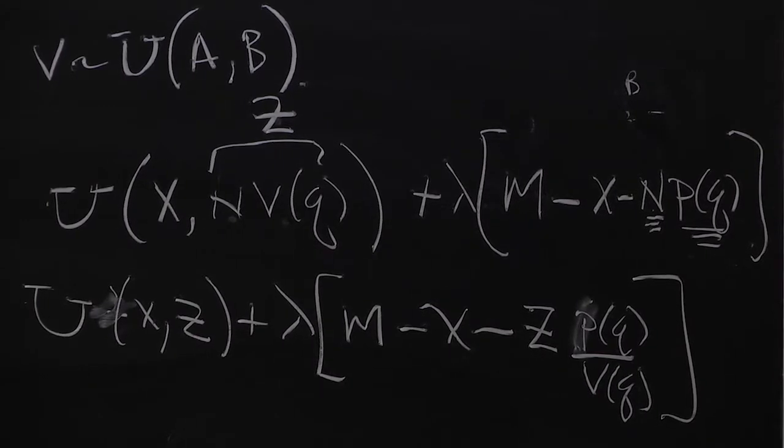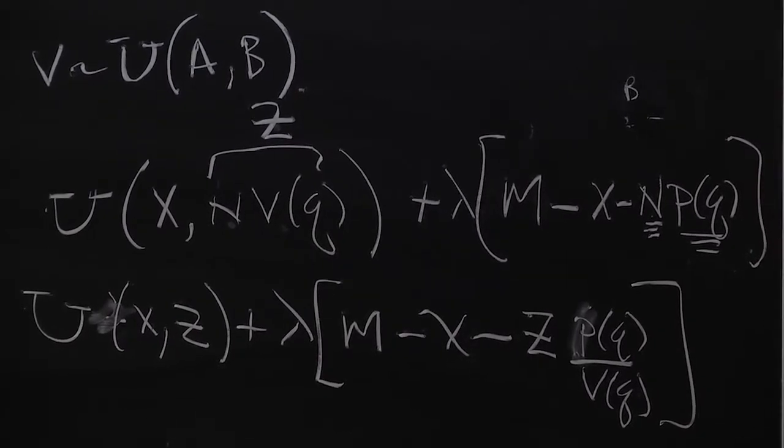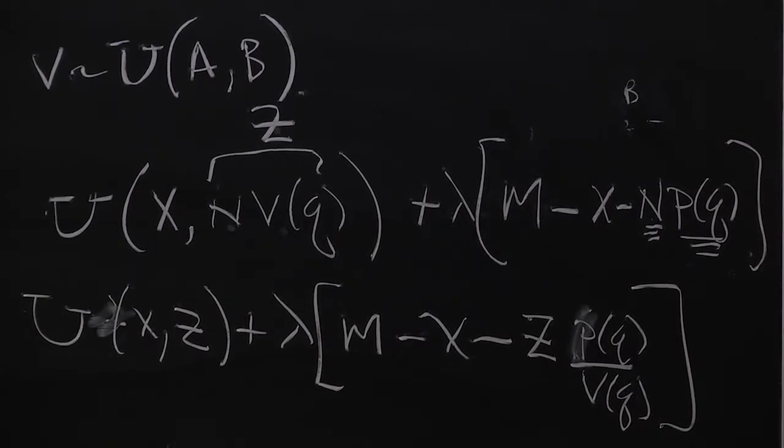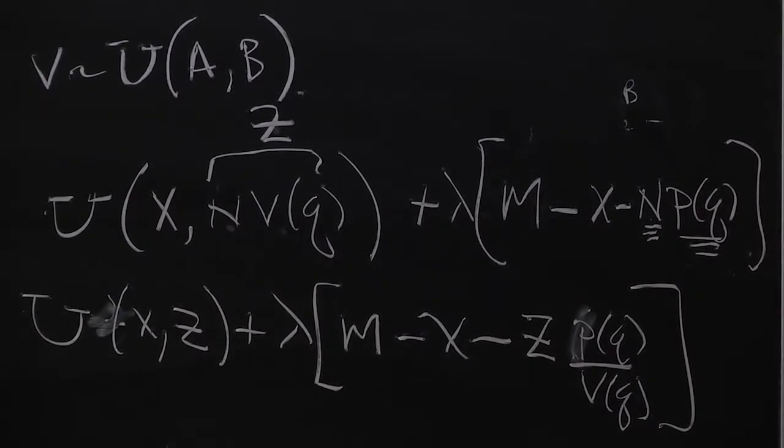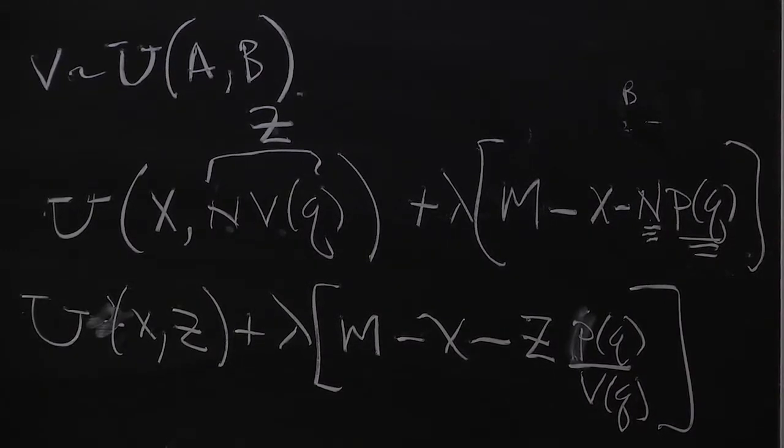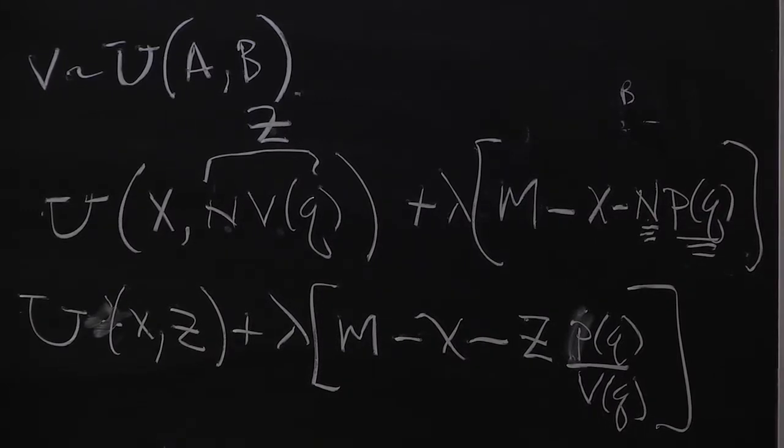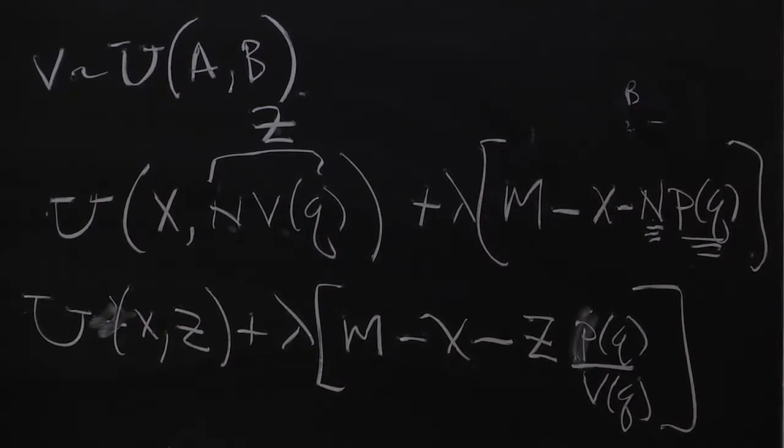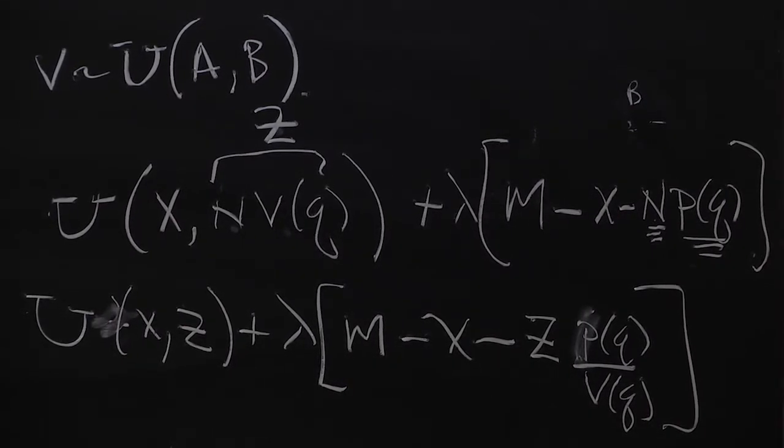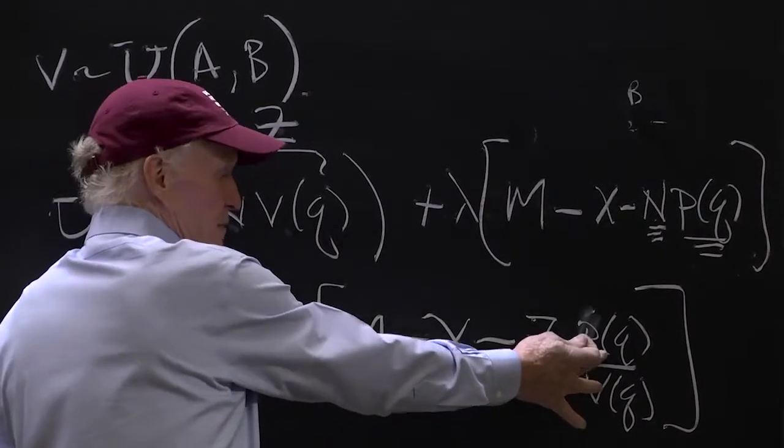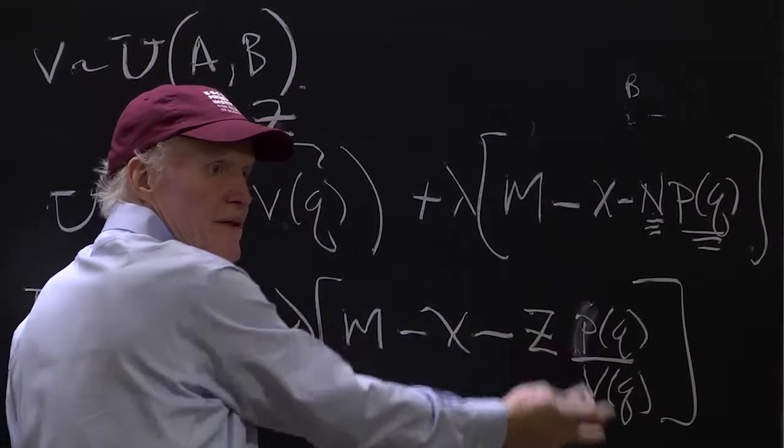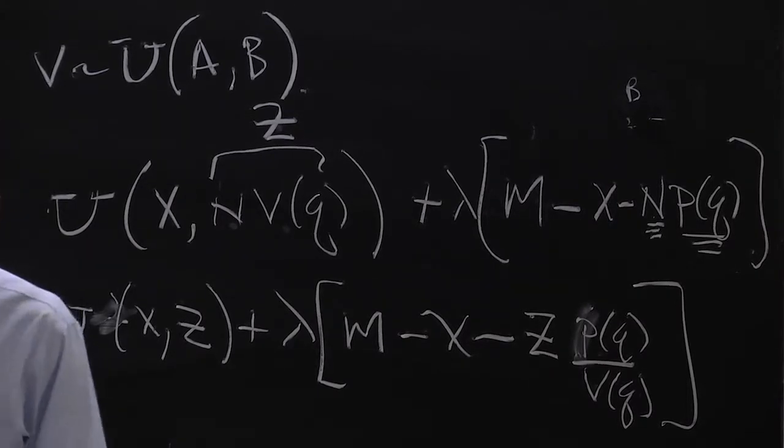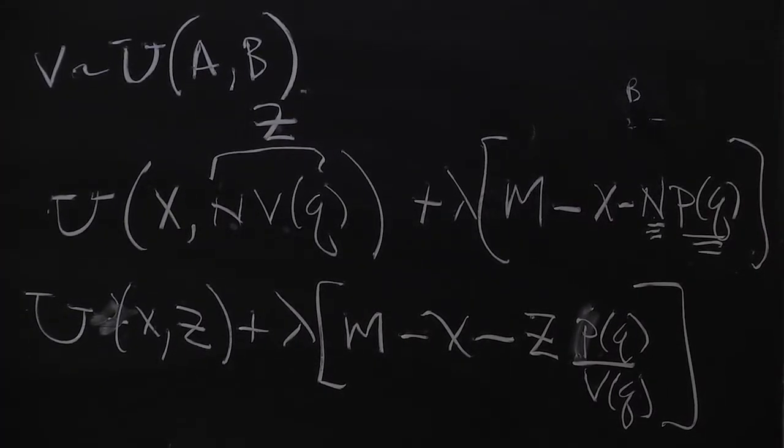How would it vary with stuff like income or preferences? How would it vary as u changed or as m changed? What would you have an incentive to do? Wouldn't there just be some q star that would minimize that ratio? That would be like the efficient quality level. That is, there would be a q star that would be the efficient quality level.